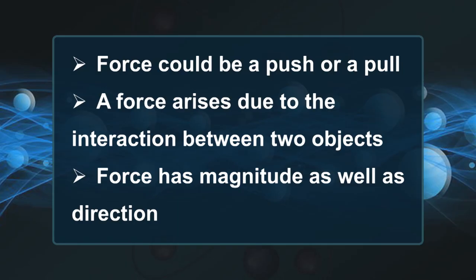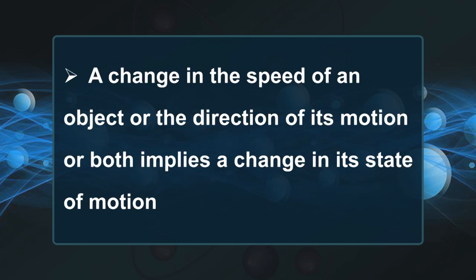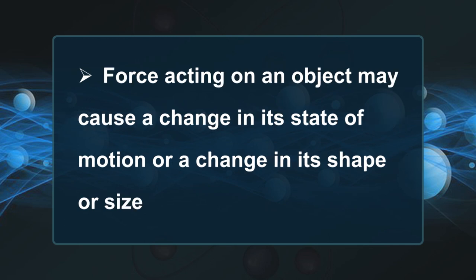Hello everyone, hope that you are all doing well. In the last few sessions, we have discussed that a force could be a push or a pull. A force arises due to the interaction between two objects. Force has both magnitude and direction. The change in speed or change in direction of motion or both implies change in state of motion of the objects. A force can cause change in shape, change in size, or change in state of motion.